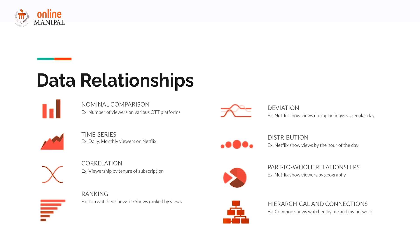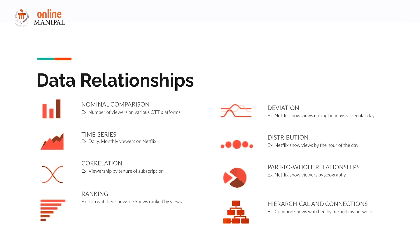Deviation — this helps us examine how data points relate to each other, particularly how far they are from the mean. For example, Netflix shows watched during the holidays versus regular days. Distribution — this shows data distribution often around a central value, helping gauge the shape of data; for example, views by hour of the day. Part-to-whole relationship — how data compares to a larger whole; for example, percentage of viewers across geographies. Hierarchical and connections — when there's a relationship between various entities; for example, analyzing series watched by me, my network, and their network — that's network analysis.